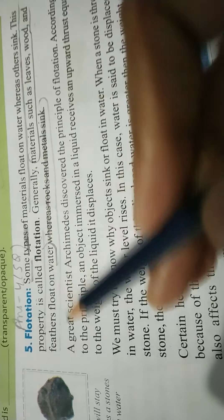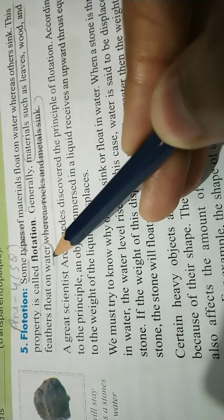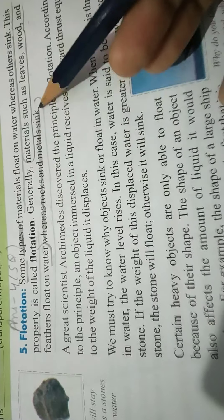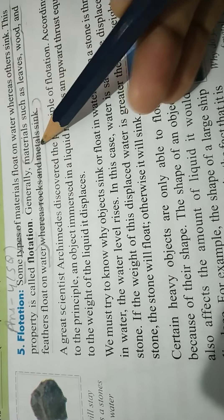Leaves, wood, and feathers float on water, whereas rocks and metals sink in water.